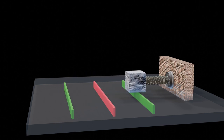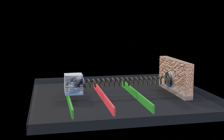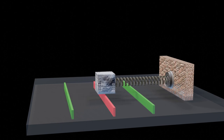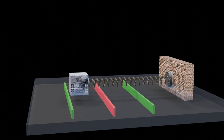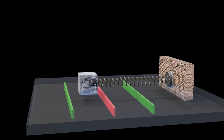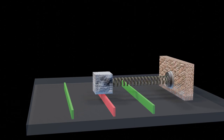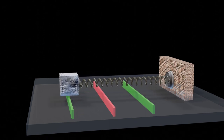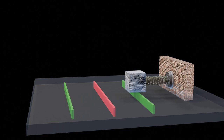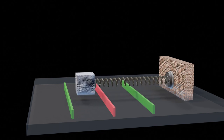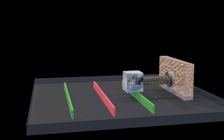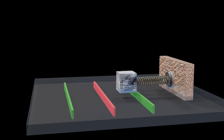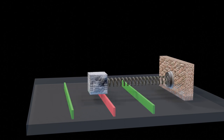As you observe the oscillating object, the displacement to the left and right is symmetrical — the distance it travels to the left mirrors its travel to the right. Additionally, you can observe that the time required to finish each oscillation remains constant. This consistent time interval needed to complete one full cycle of oscillation is known as the period of oscillation, typically measured in seconds.